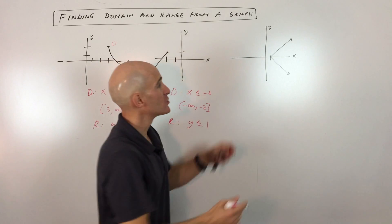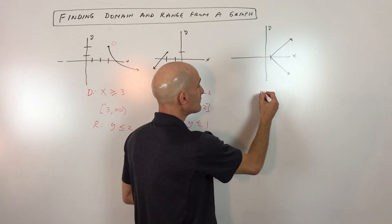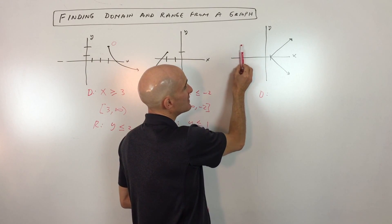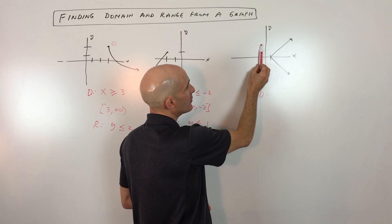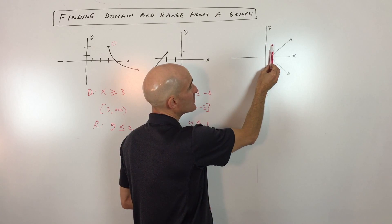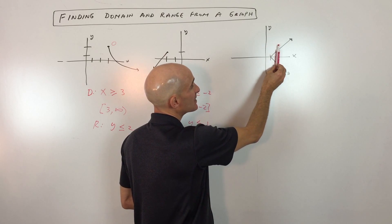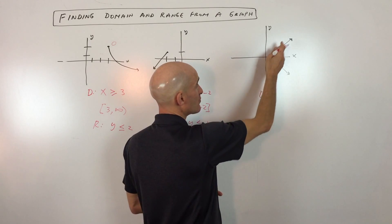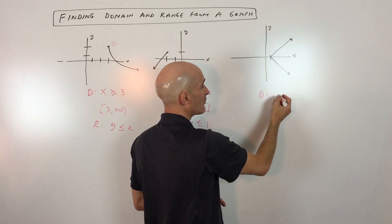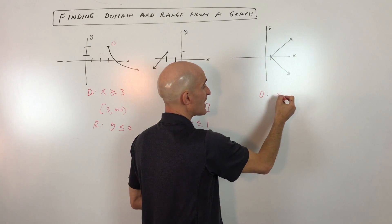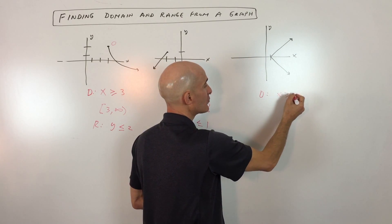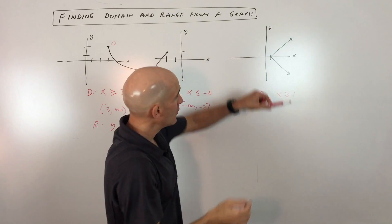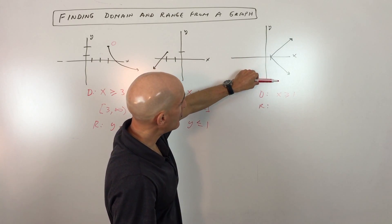Last example — see if you can figure this one out. For the domain, the x values: can x be negative? No. Can it be zero? No. Can it be one? Yes. And to the right of one? Yes, there are points on the graph when x is one or greater. So the domain is x ≥ 1.